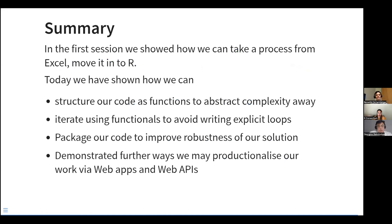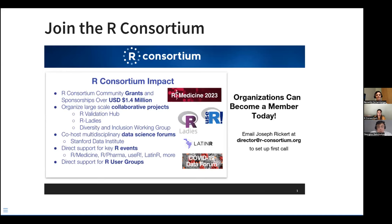Just to summarize: we can put our code into functions, avoid explicitly writing loops using functionals, package our code to share it with others and improve robustness, and share further with web APIs and Shiny apps. That concludes my presentation. We have around 30 minutes for Q&A. Before I forget — if you think your organization could benefit by joining the R Consortium, please consider doing so. I'll invite my colleague Benedict to join me for the Q&A.